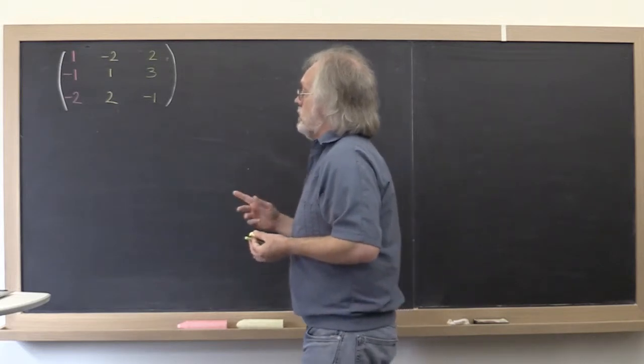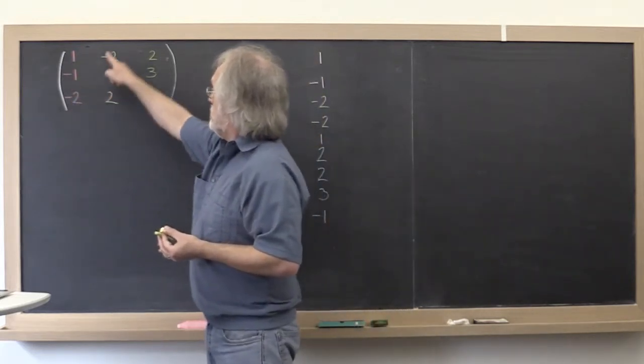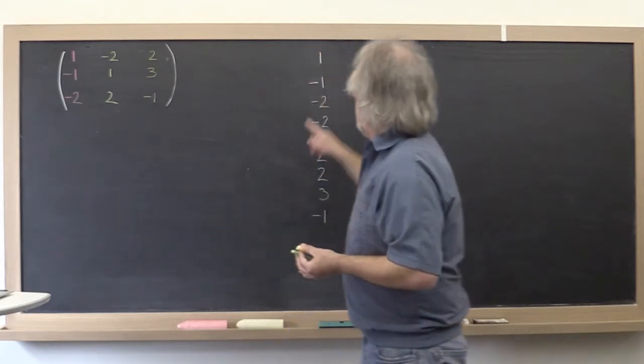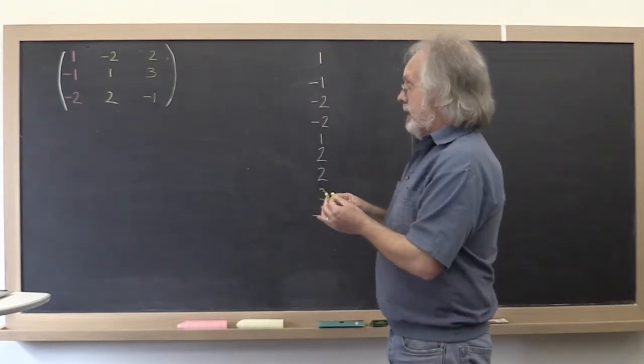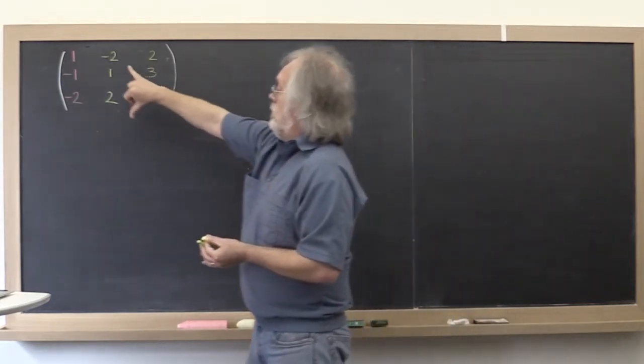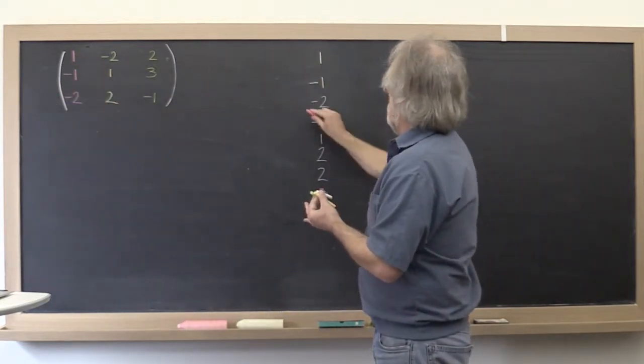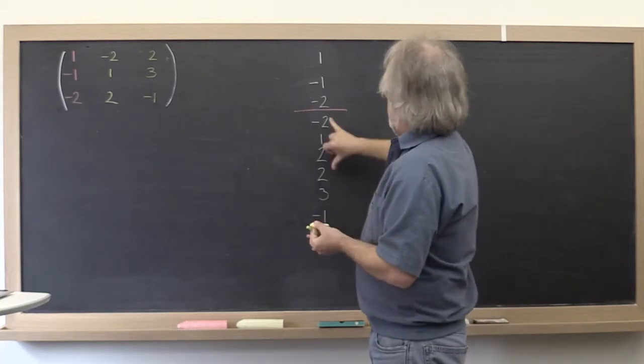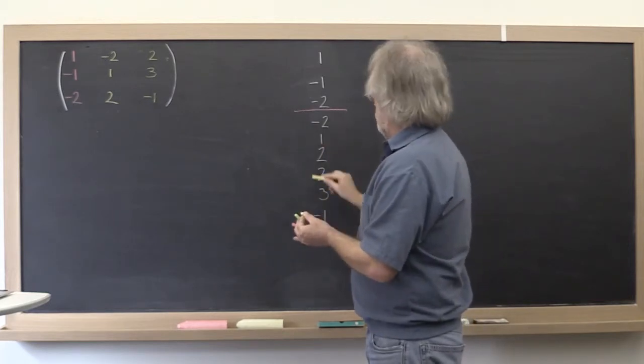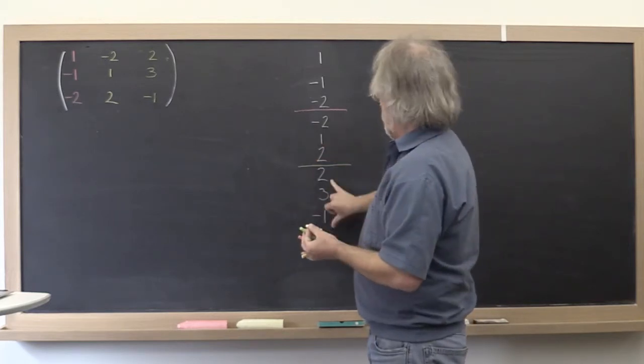What does column major order mean? We have the numbers here. What I have written is the first column first, and then the second column, and then the third column.